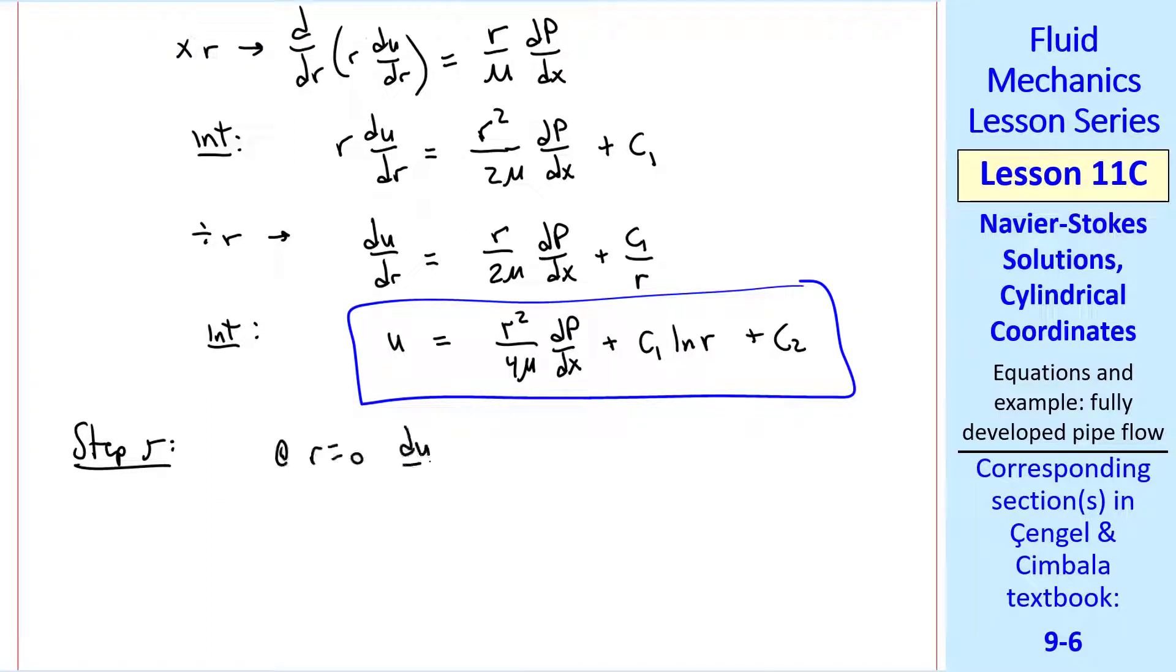That's where step five comes in, applying the boundary conditions. One of our boundary conditions was that at r equals 0, du/dr equals 0. Let's apply that boundary condition to this equation. Otherwise, we end up with 1 over r and r going to 0, which is infinity.